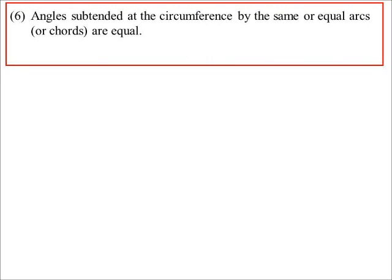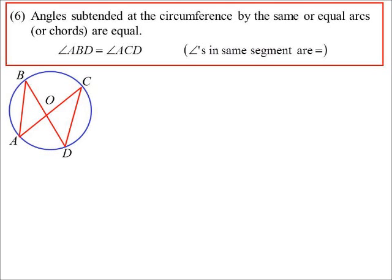This one: angles subtended at the circumference by the same or equal arcs, doesn't have to be the same arc necessarily, are always going to be equal. So we more commonly see it when they're coming from the same arc, but if you know the arcs are of same length, then those angles have got to be the same.